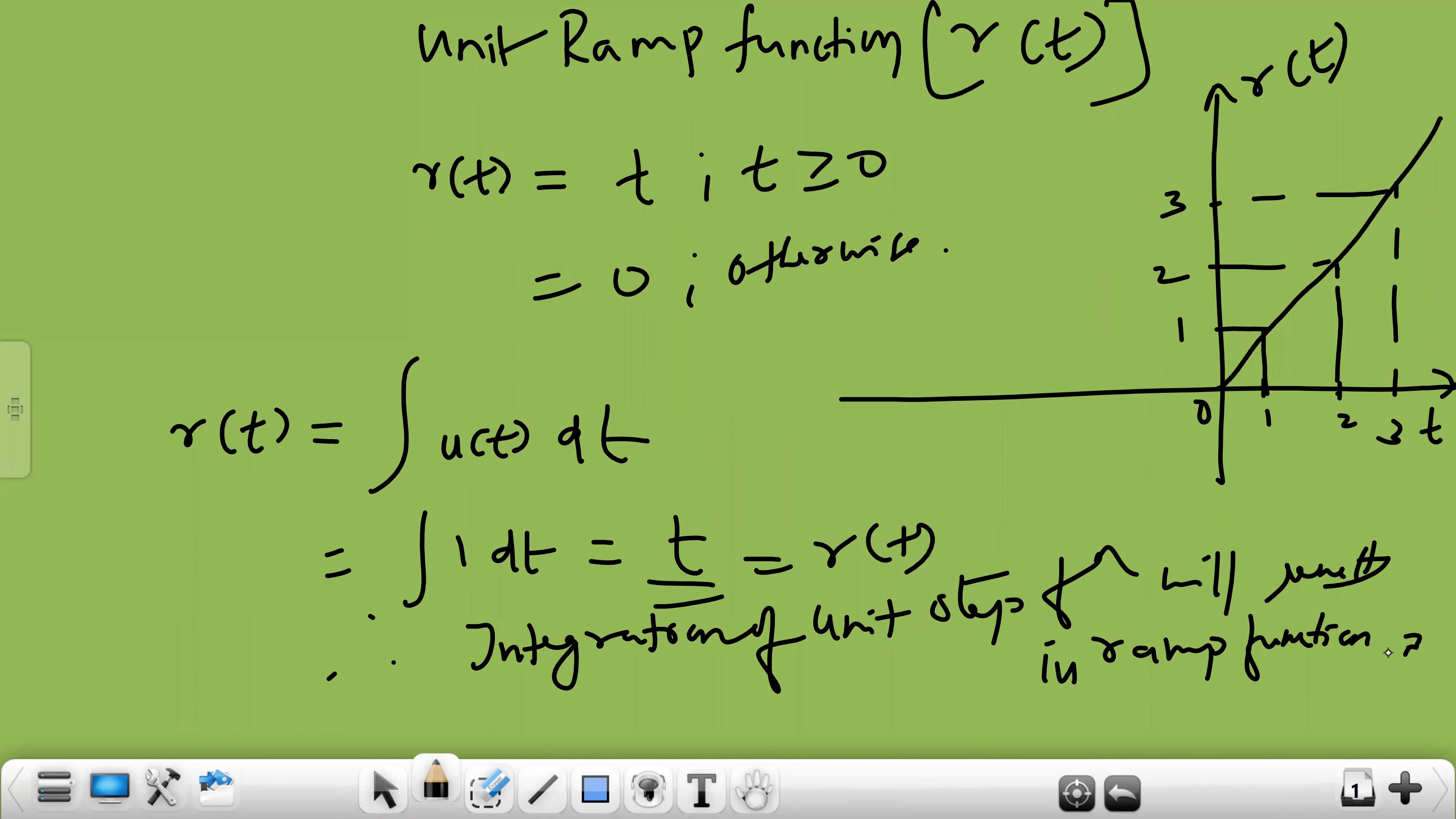So now we have discussed about elementary signals in that we have two sub classifications. One is elementary continuous time signal and other one is elementary discrete time signal. So till now we have discussed the three types of elementary continuous time signals. And we have two more that is sinusoidal and exponential that we will discuss tomorrow.